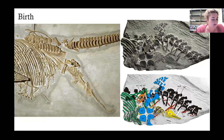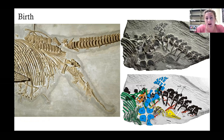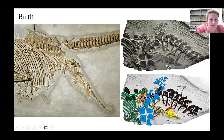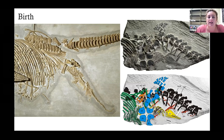Fossil evidence gives us really cool insights into how ichthyosaurs lived. We know they were air-breathing because they have nostrils in the skull, and we know they bore live young because we've found fossils with babies inside. You can see one coming out of the birth canal here, and tiny vertebrae within the rib cavity representing other juveniles still inside the mother. It's thought ichthyosaurs were probably ovoviviparous - the embryo develops inside an egg retained within the mother until it hatches - the same as seen in many sharks, rays, and snakes today.